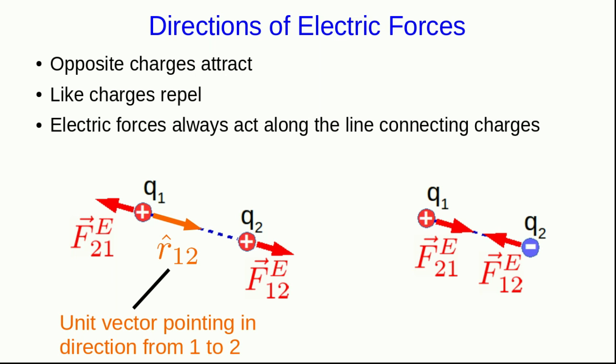And so what we do is we define a unit vector that we would call r hat one two, which is defined as a unit vector, a vector that is unitless and magnitude one and points in the direction from charge one to charge two. This will be a convenient vector for writing down these electrical forces in fully vectorial form.